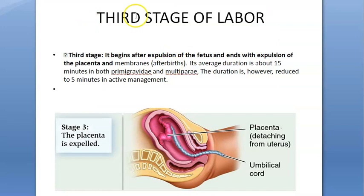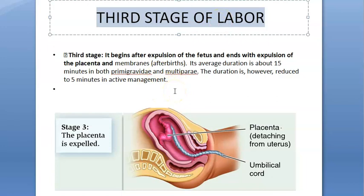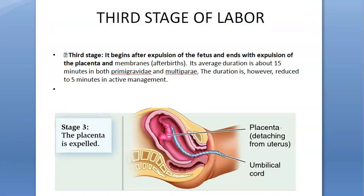For exam purposes, the signs and events of the third stage of labor to write are: separation of the placenta, separation of the membranes, expulsion of the placenta, and hemostasis.